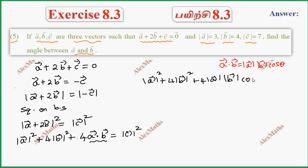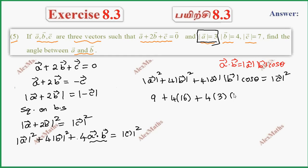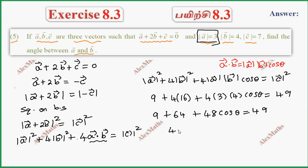Substituting the values: mod A is 3, so mod A squared is 9. Plus 4 times mod B squared, which is 16, giving 64. Plus 4 times mod A times mod B times cos theta, so 4 times 3 times 4 times cos theta, giving 48 cos theta equals mod C squared which is 49. So 9 plus 64 plus 48 cos theta equals 49, meaning 48 cos theta equals 49 minus 9 minus 64, which equals minus 24.